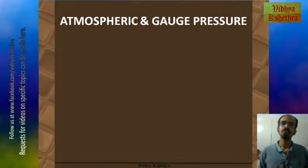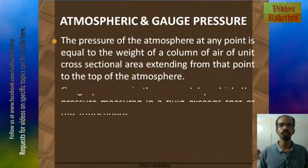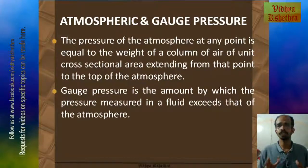Now atmospheric and gauge pressure. The pressure of the atmosphere at any point is equal to the weight of a column of air of unit cross-sectional area extending from that point to the top of the atmosphere. And gauge pressure is the amount by which the pressure measured in a fluid exceeds that of the atmosphere.